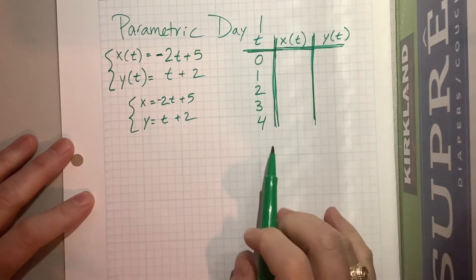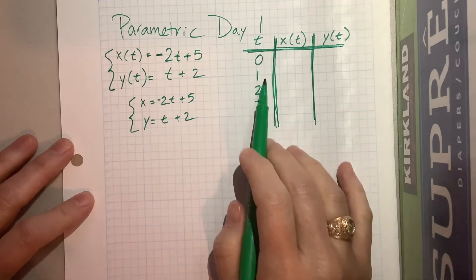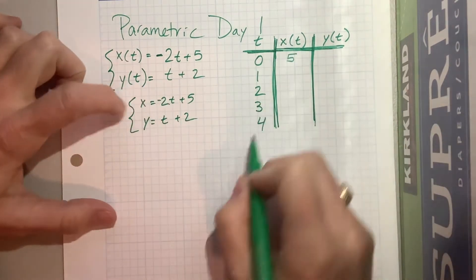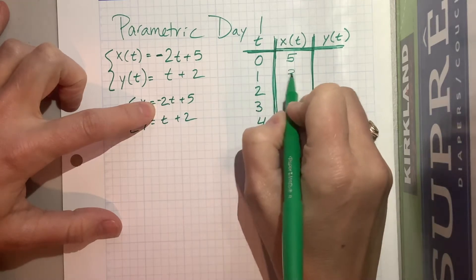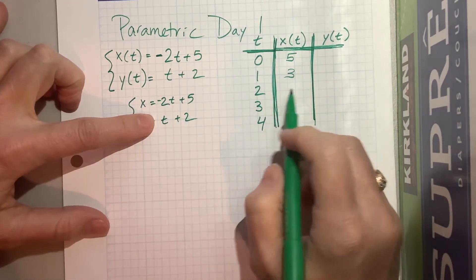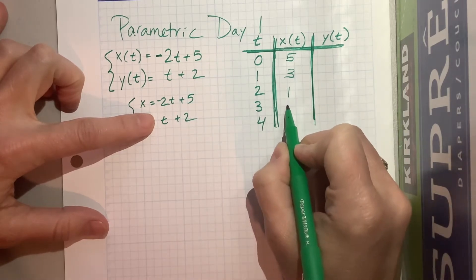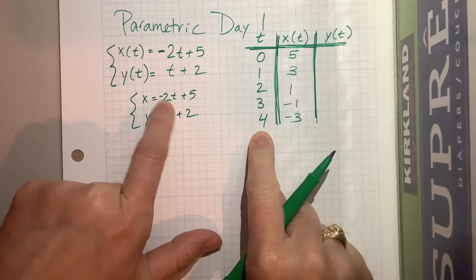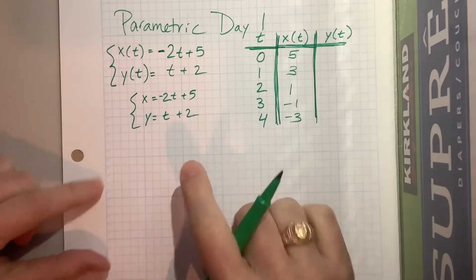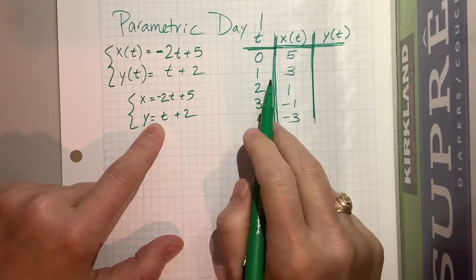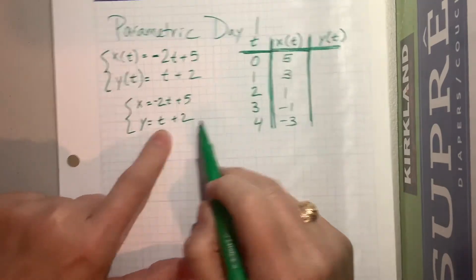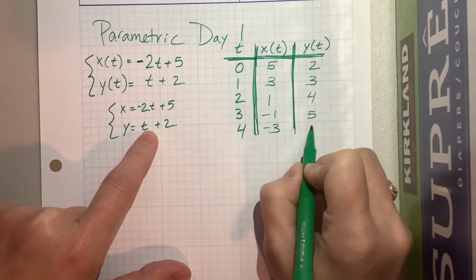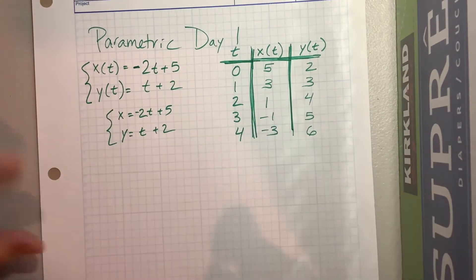The first thing I want to do is make a chart. I want to find these values by plugging in 0, 1, 2, 3, 4 for t into x. When t=0, that gives me 5. When t=1, that's negative 2 plus 5 is 3. My slope is negative 2, so subtract 2 more gives 1, then negative 1, then negative 3. Let's verify: plug in 4, that gives me negative 8 plus 5 is negative 3. For y, I just plug in t and add 2, so I get 2, 3, 4, 5, 6. Notice that had a slope of 1. These are just two little linear equations.